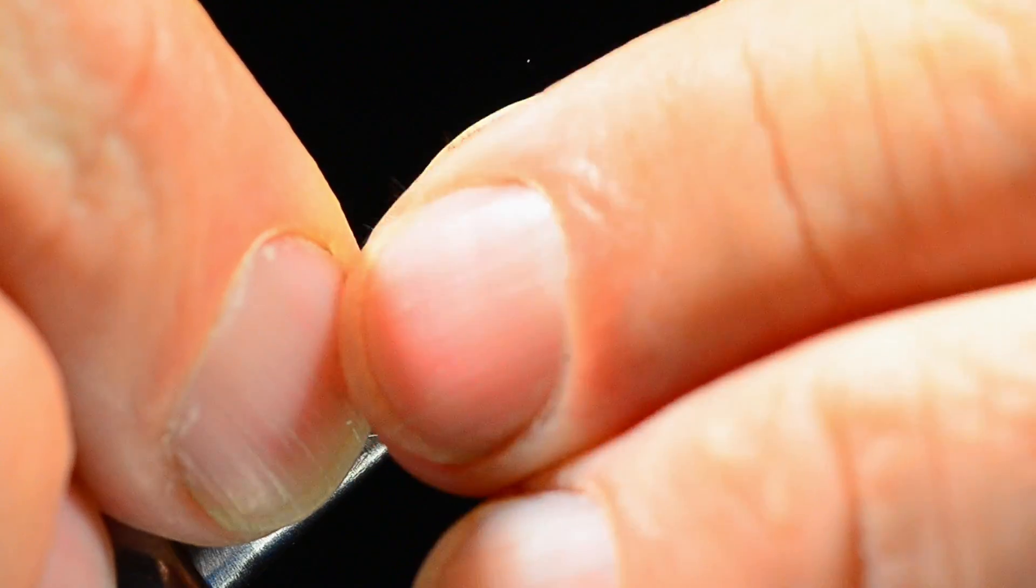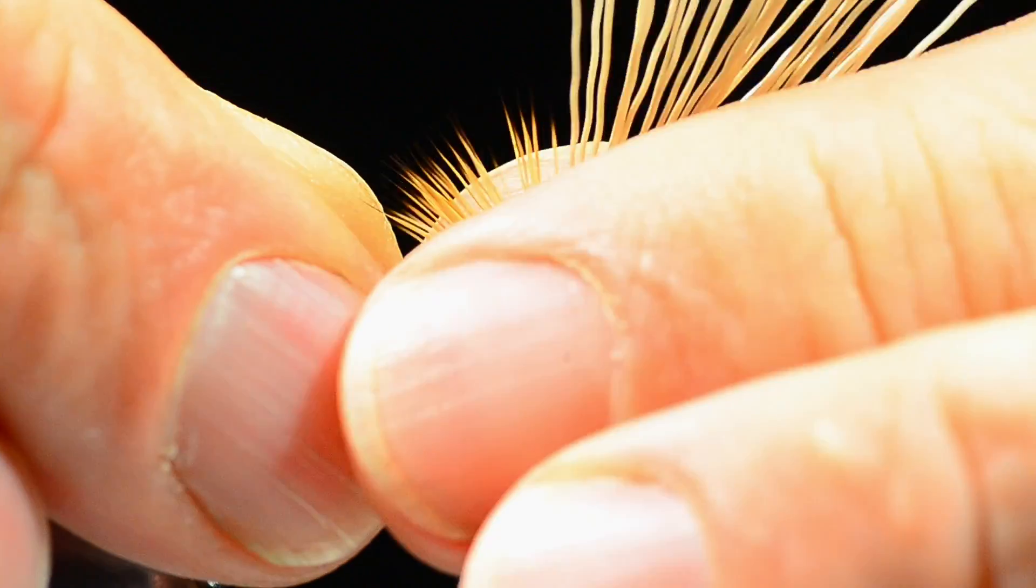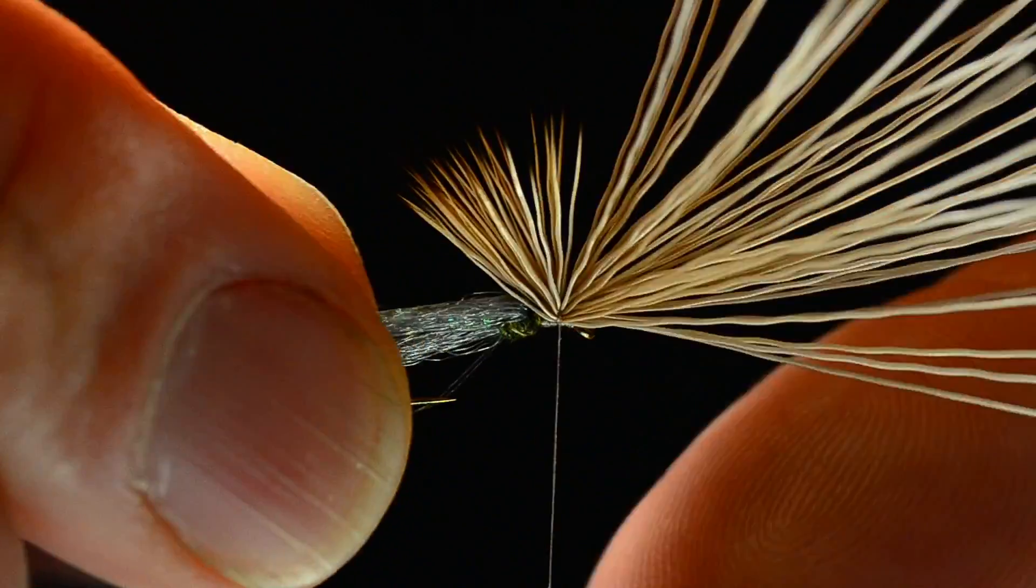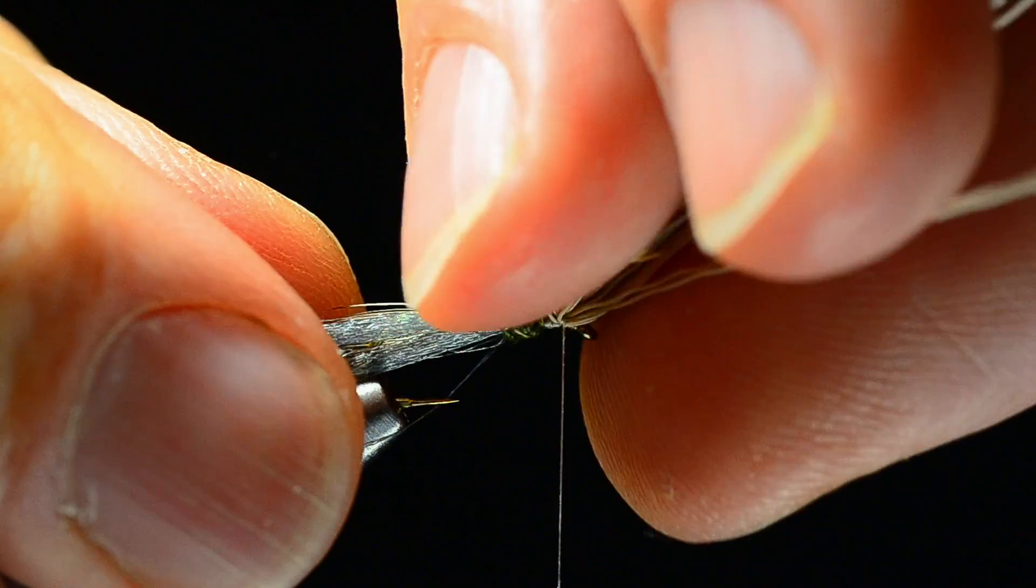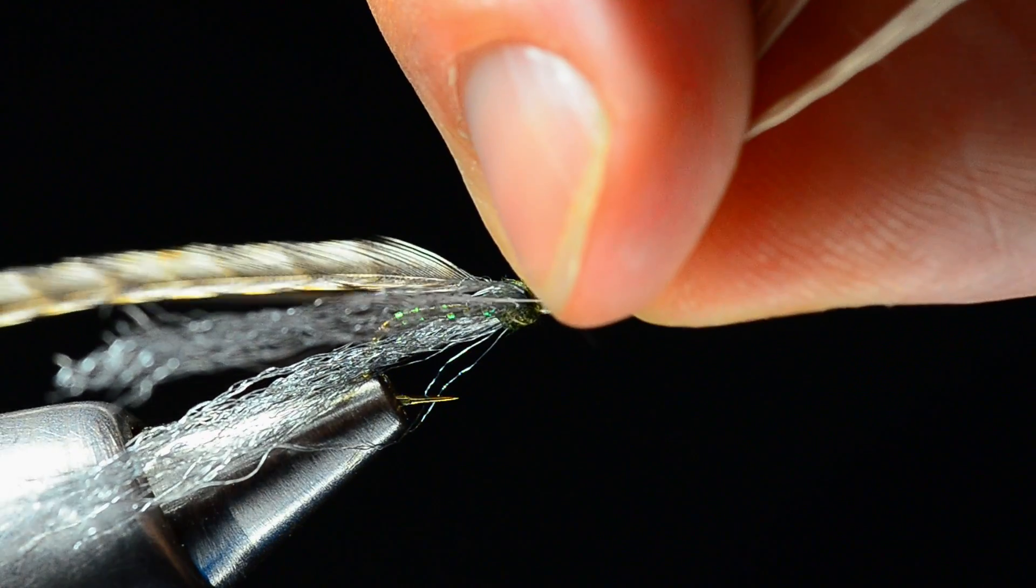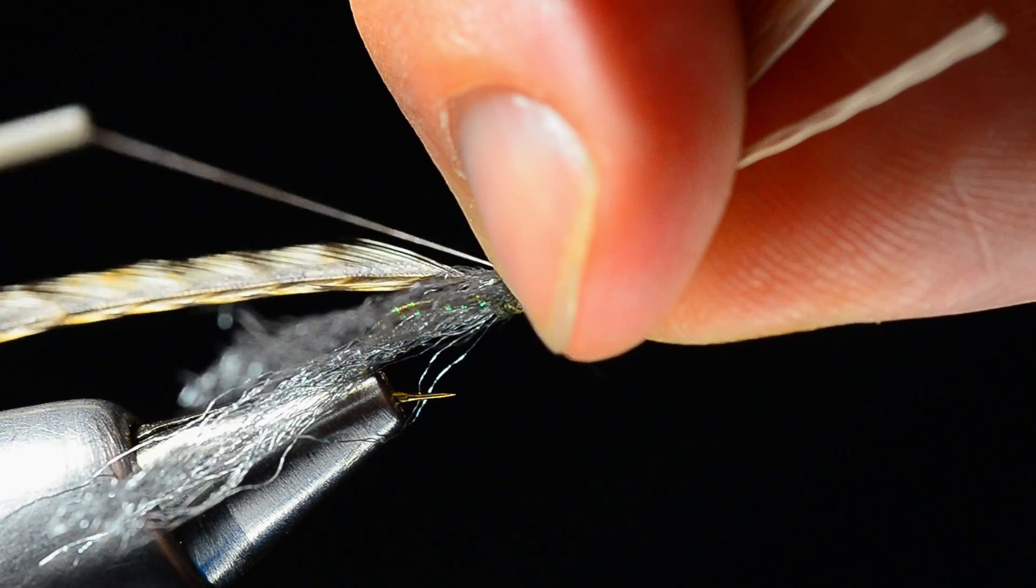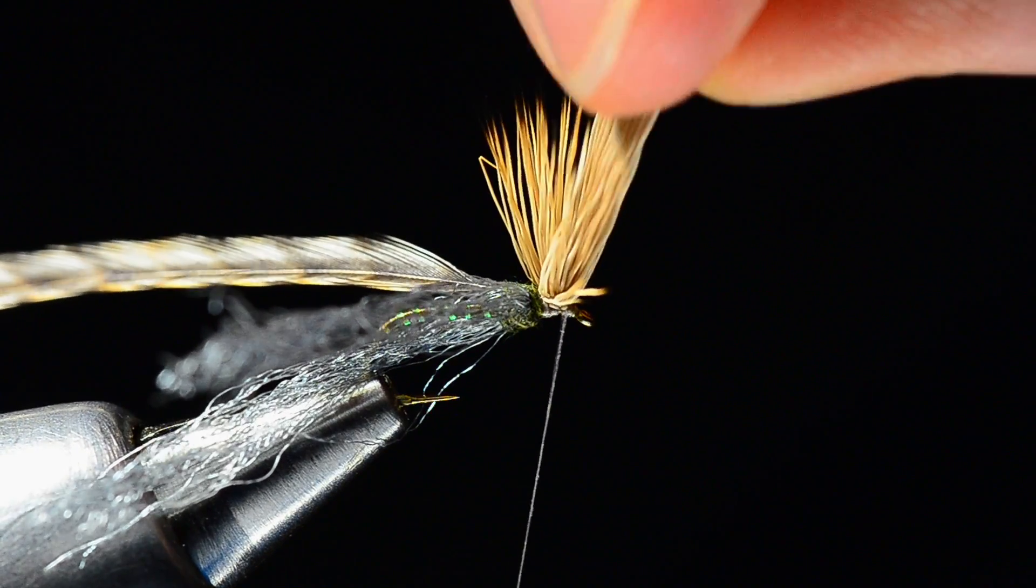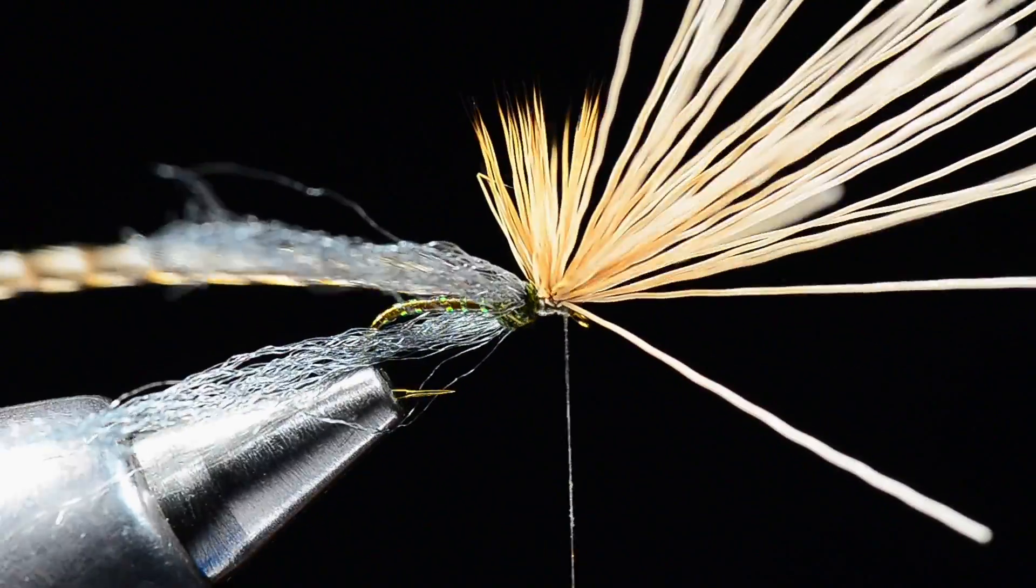So now I can sweep these butt ends up and then also sweep the tip ends up. You can see I just slid my hand back to hold the spent wings back out of the way. I find it helps to sort of stand this all up like so. Now what I'm going to do is come around the base of the wing with just a couple little parachute turns. I'll just leave that thread hanging on the far side.